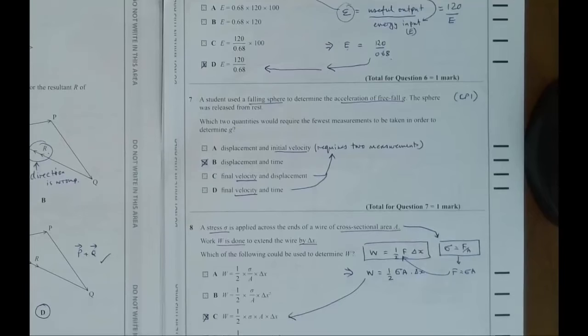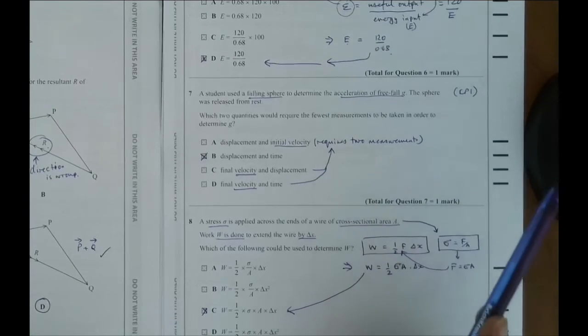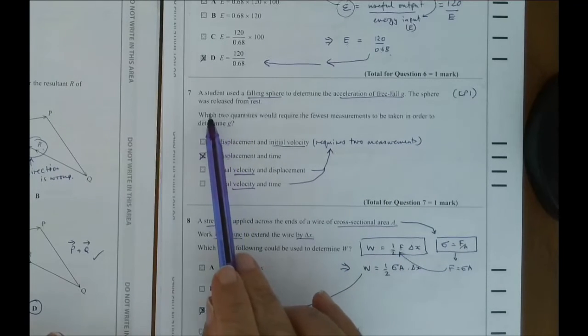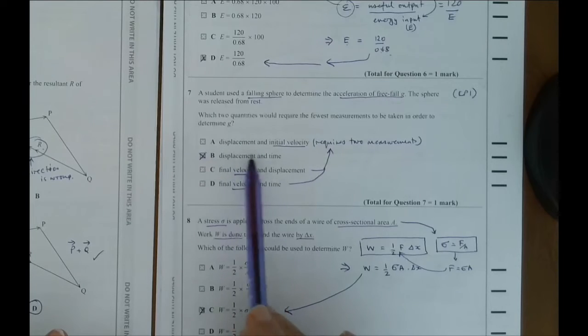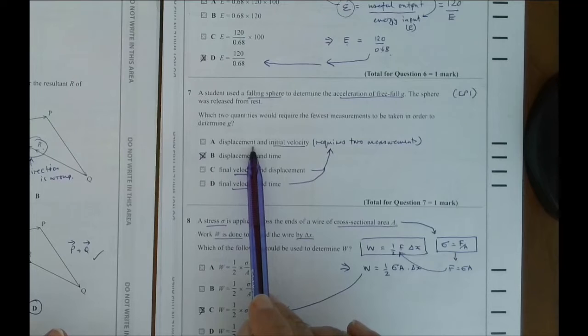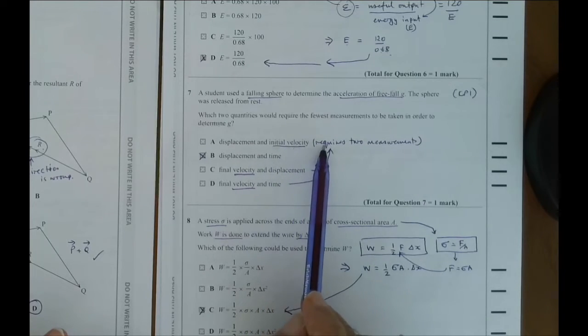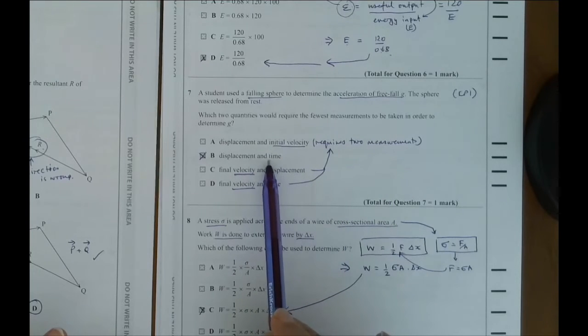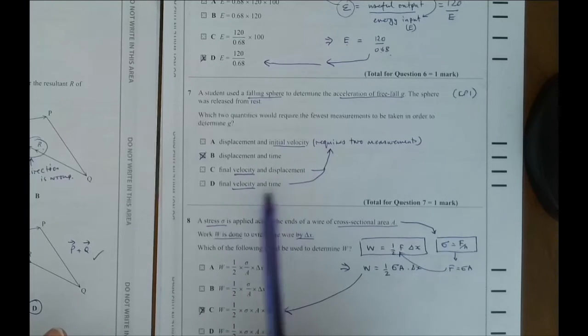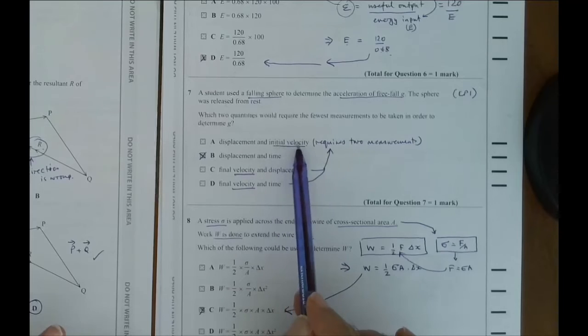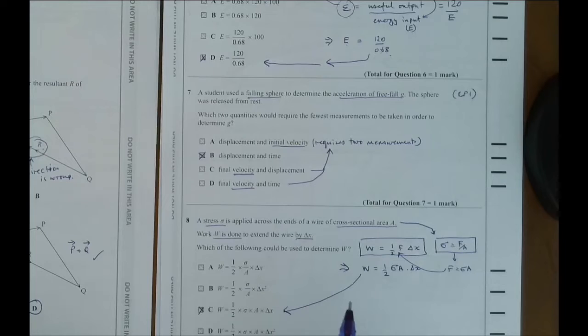Question 7 is using a falling sphere to determine the acceleration of freefall. This is actually core practical 1, so it's a required practical. You need to look at different ways that you can actually do this experiment in the lab. Which two quantities would require the fewest measurements to take in order to determine G? If it's got velocity, displacement, you want to know how far the object is falling. So you're basically just dropping a sphere. You only need the time. Once you've got the time, you can work it out using the correct Suvatt equations. So only B requires two measurements, all the others require three measurements. So the one with the fewest measurements would be B.